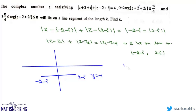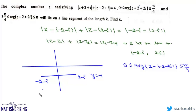The second locus is: argument of (z - (-2-2i)) lies between 0 and π/4. We first locate the point -2-2i. The argument should lie between 0 and π/4, so we are talking about all the points inside this angle region.